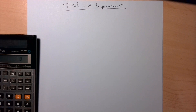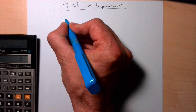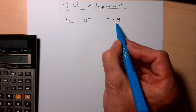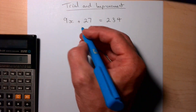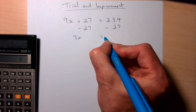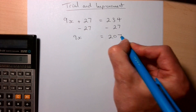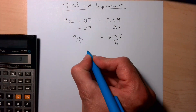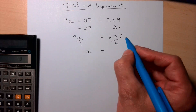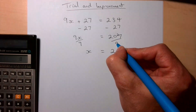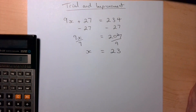For example, thinking back to solving equations using algebra skills, you might have solved something like 9x + 27 = 234. We'd remove the 27 using inverse operations — subtract 27 from both sides to leave 9x = 207 — then divide by 9 to get x = 23. That's solving using inverse operations, but you're not allowed to use that method when doing trial and improvement.